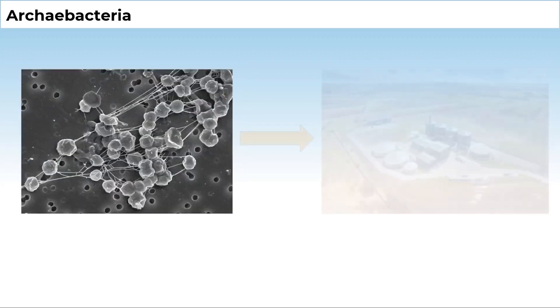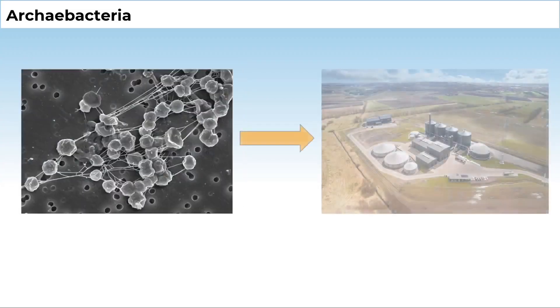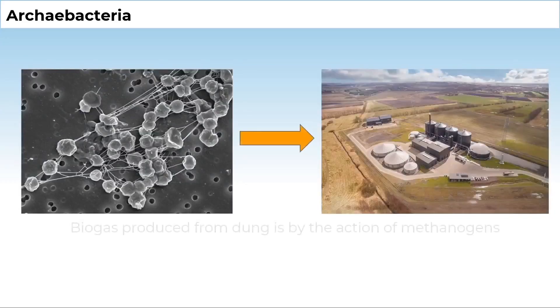For example, methanogens are present in the gut of several ruminant animals such as cows and buffaloes, and they are responsible for the production of biogas methane from the dung of these animals.